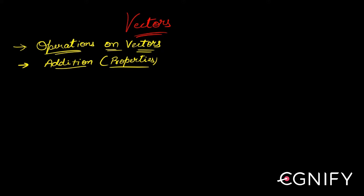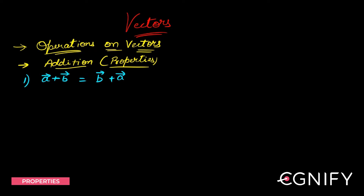Let's finish some properties on addition. The first property is just like your normal algebraic addition — your vectorial addition is also commutative. So 1 plus 2 is equal to 2 plus 1, which equals 3. Similarly, vectorial addition is also commutative. This should be slightly intuitive. Why is it true? Let's use the parallelogram law of vectors for that.